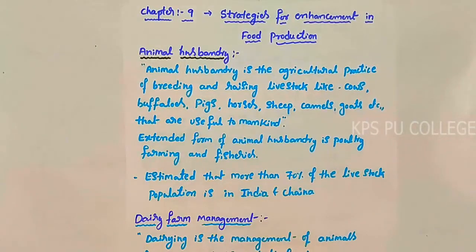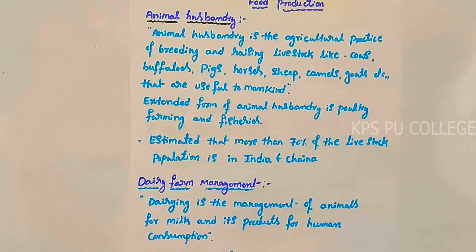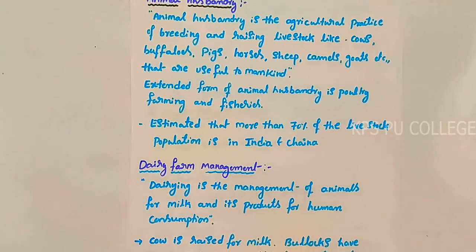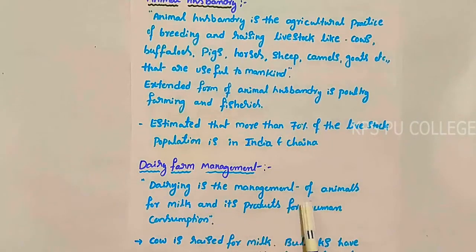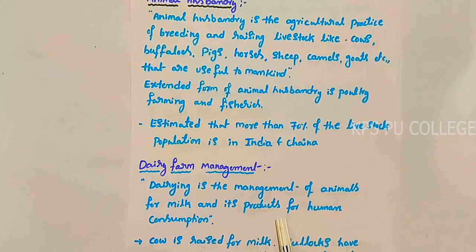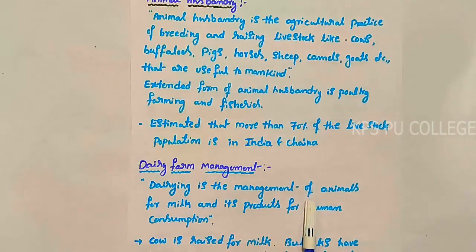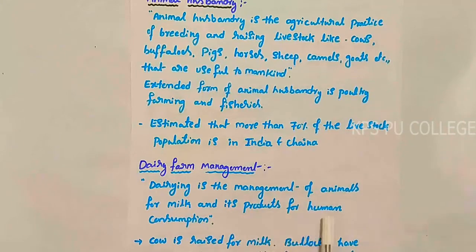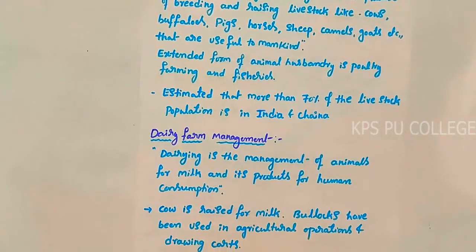In animal husbandry, the first concept is dairy farm management. Dairy farm management is the management of animals mainly for milk and its products for human consumption.